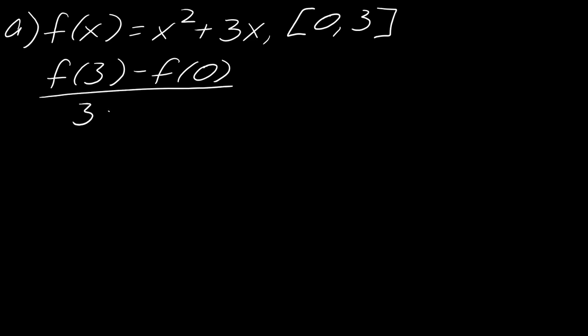So here's the setup, and it's actually a very straightforward problem. You're going to plug in 3 into the function minus f of 0 of the function over 3 minus 0. So it really is just the slope formula. So if I do this then, this will be 3 squared plus 3 times 3 minus, so this next part will be 0 squared plus 3 times 0. I probably don't even need to really write that out.